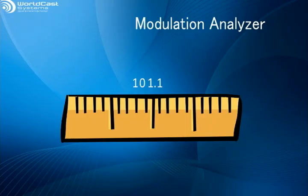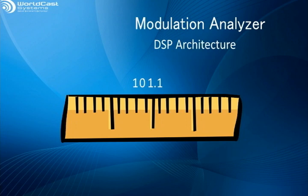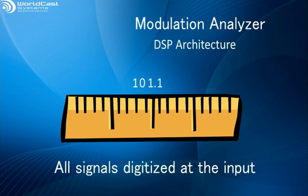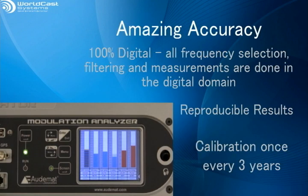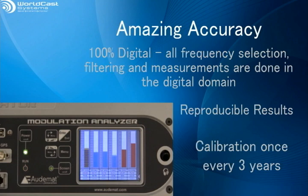Inside the Modulation Analyzer, the powerful DSP platform digitizes the entire FM band and all input signals. From there, all frequency selection, filtering, and measurements are done in the digital domain. This gives you absolutely reproducible results, and the system only requires calibration once every three years.